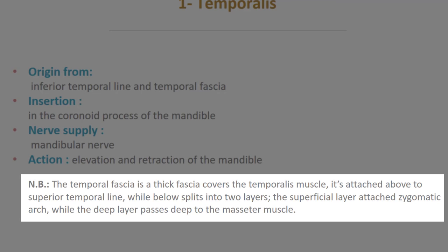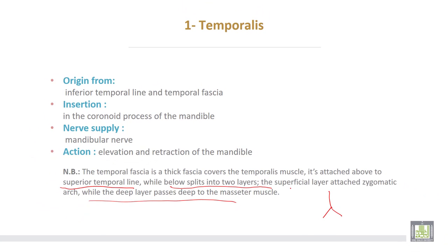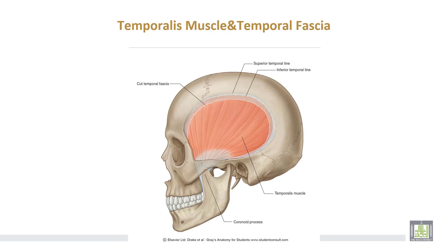The temporal fascia is a thick fascia that covers the temporalis muscle. It is attached above to the superior temporal line, while below it splits into two layers: the superficial layer is attached to the zygomatic arch, while the deep layer passes deep to the masseter muscle. This is the superior temporal line above and the inferior temporal line below, showing the cut temporal fascia splitting into two layers.